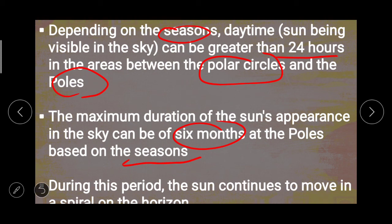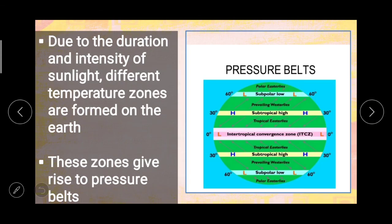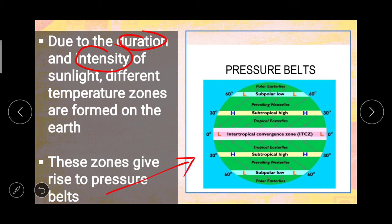During this period, the sun continues to move in a spiral on the horizon. We have seen in standard five that the Earth's axis is inclined, and these important parallels arise because of its inclination by 23 degrees 30 minutes. Due to the duration and intensity of sunlight, temperature zones are formed on the Earth, and the zones give rise to pressure belts. You will study more about this in further standards, but keep in mind about the pressure belts and temperature zones.